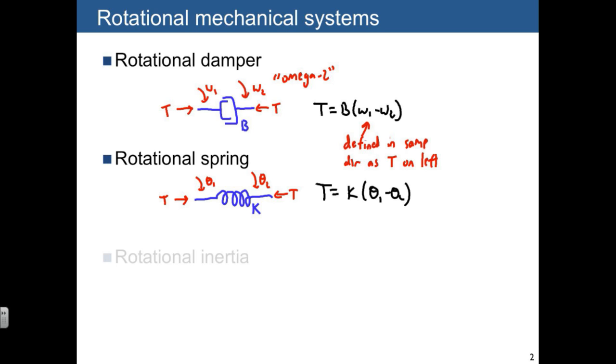Finally, we have the rotational inertia. And in this case, we often like to draw it as just an inertial mass, rotational moment of inertia, J. It will have torques acting on it and have an angular velocity, just omega for this.